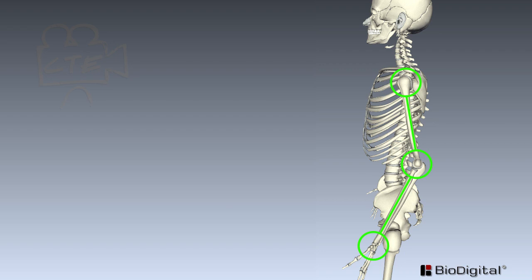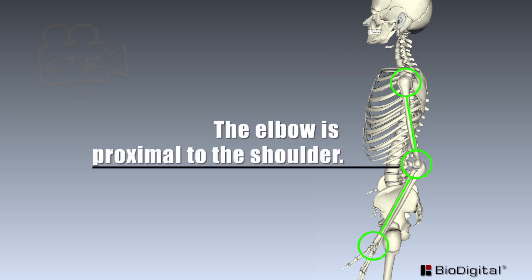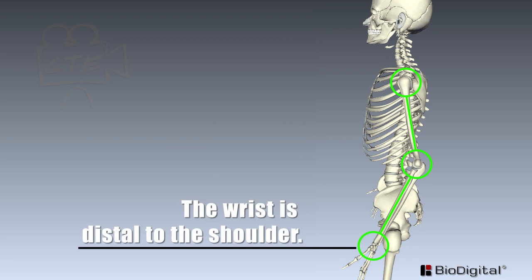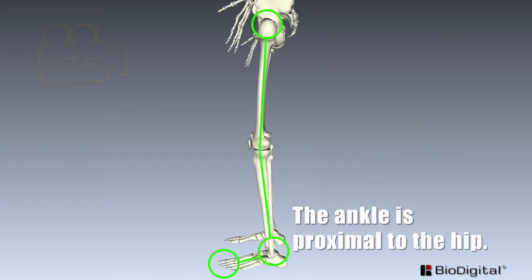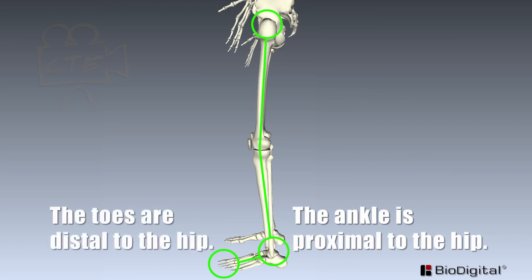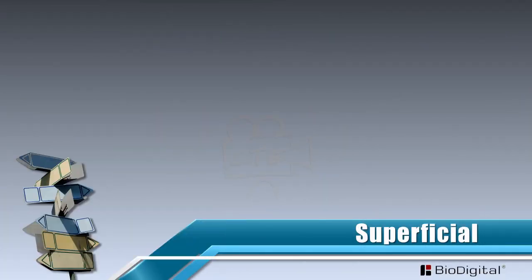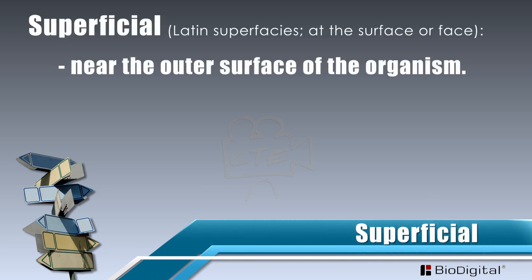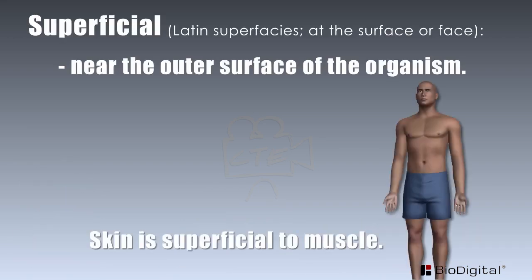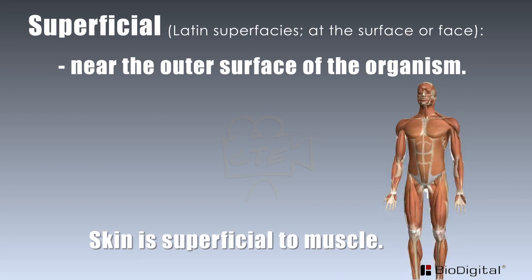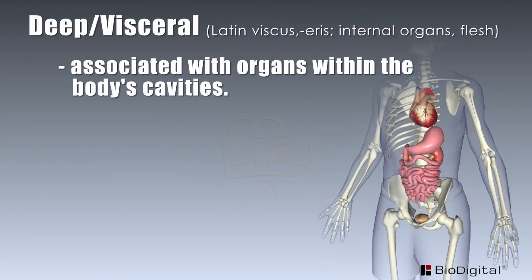Here are a couple more examples. The elbow is proximal to the shoulder, whereas the wrist is distal to the shoulder. The ankle is proximal to the hip, whereas the toes are distal to the hip. Superficial means near the outer surface of the organism — the skin is superficial to the muscle layer and other body organs. The opposite of superficial is deep or visceral. Deep means further away from the surface of the organism. Visceral is of Latin origin, referring to the internal organs or flesh associated with organs within the body's cavities.